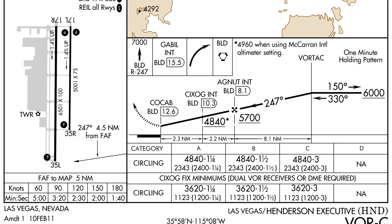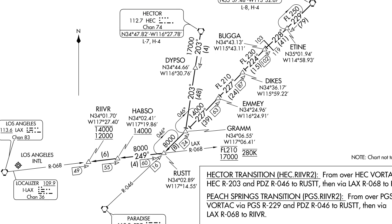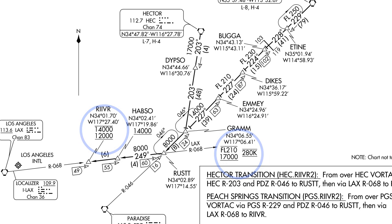The next type of number that you will see is a number with a line on top and on the bottom. These numbers indicate an altitude that you must fly during an approach. These altitudes are mandatory.